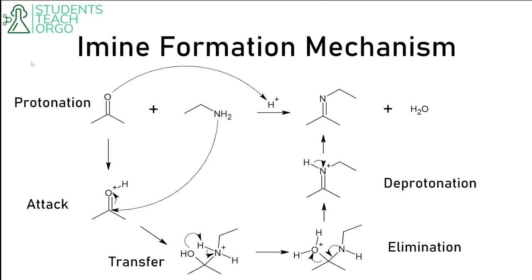For imine formation, the first step is protonation. We protonate our carbonyl to make the carbonyl carbon susceptible to nucleophilic attack. Once it's susceptible, the amine comes in, attacks the carbonyl carbon, and kicks the pi bond back to the hydroxyl, forming a tetrahedral intermediate.